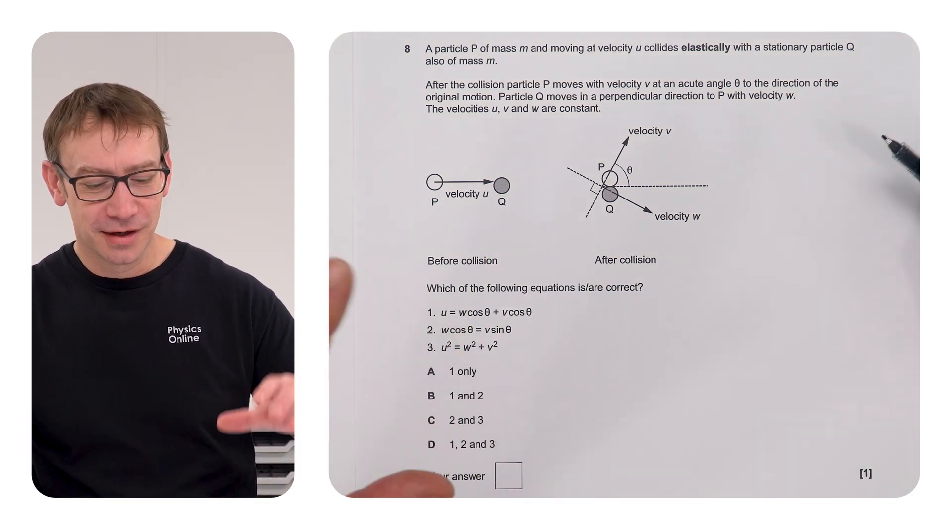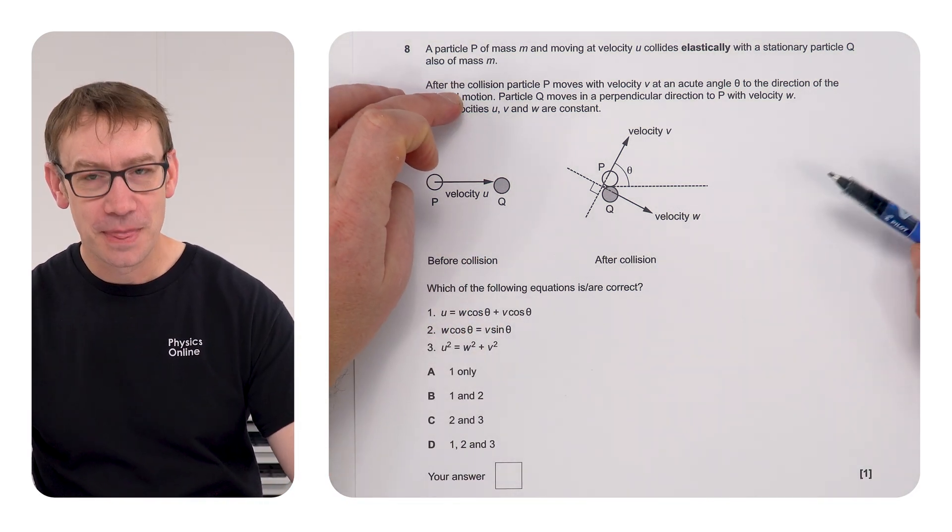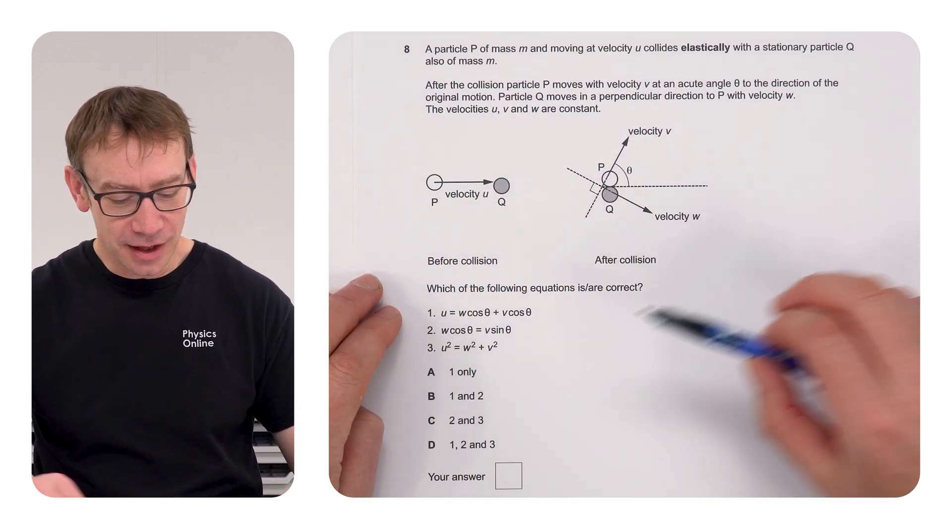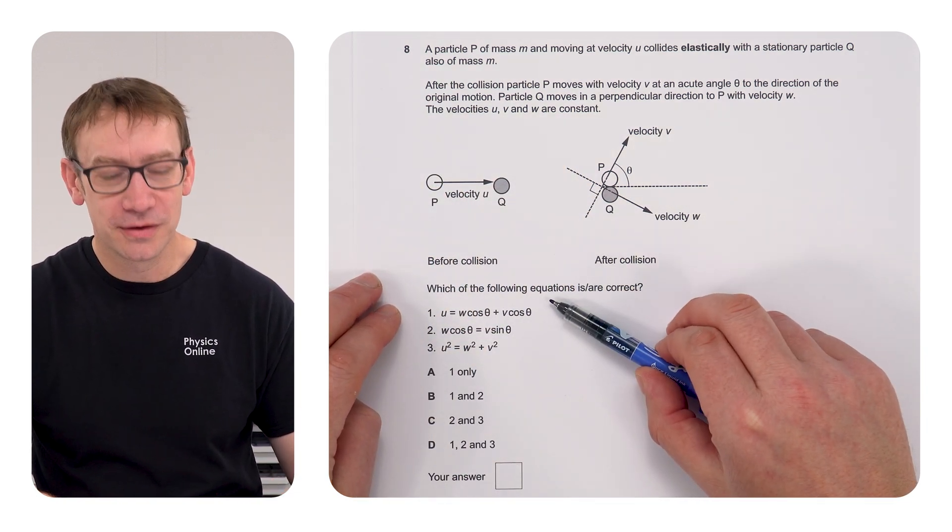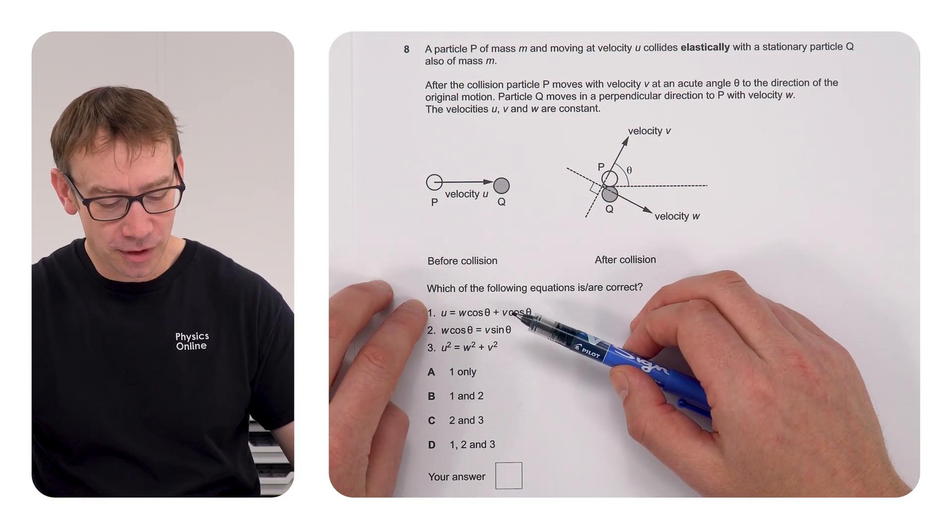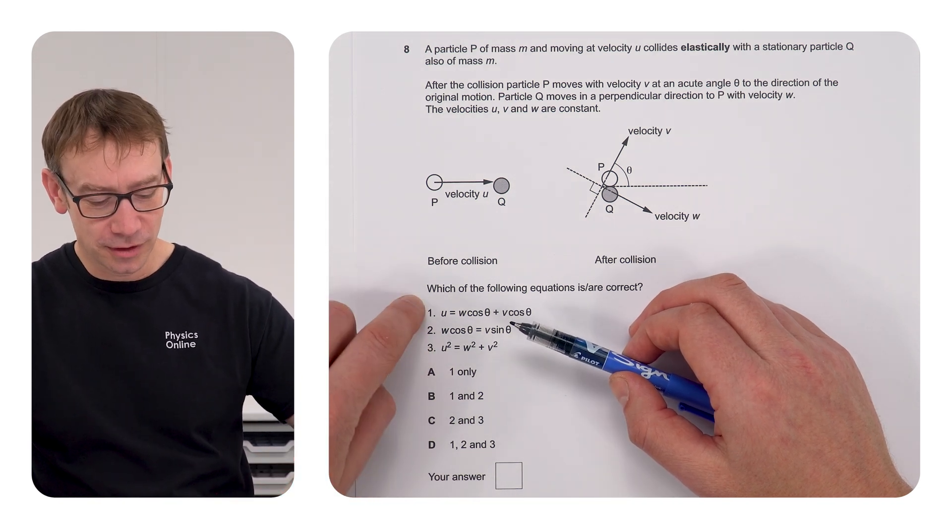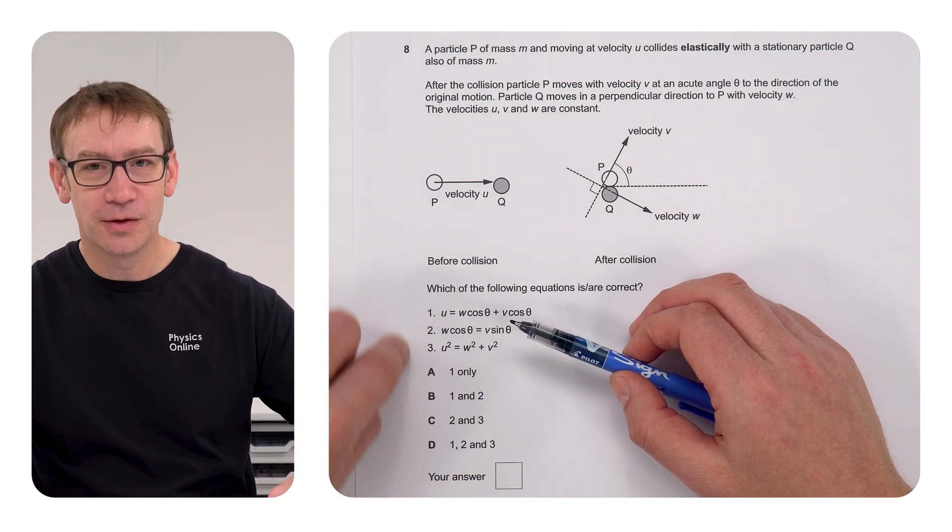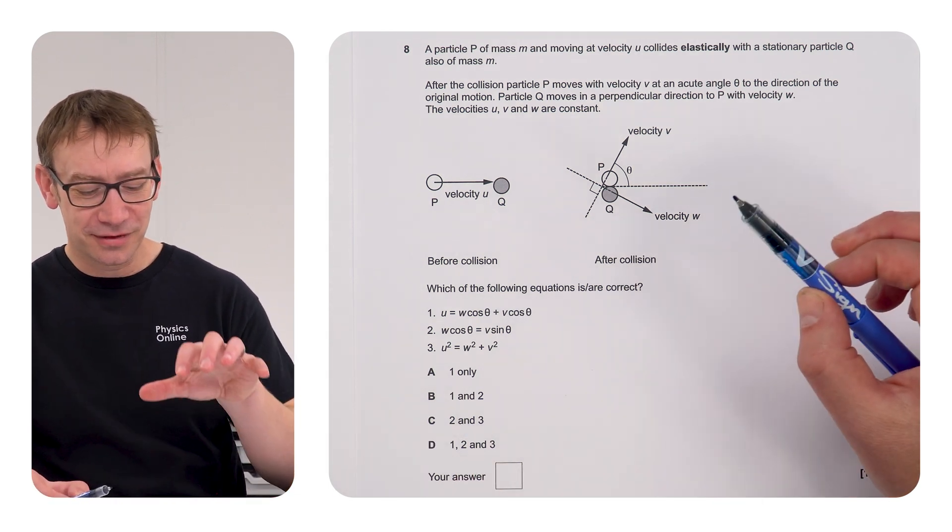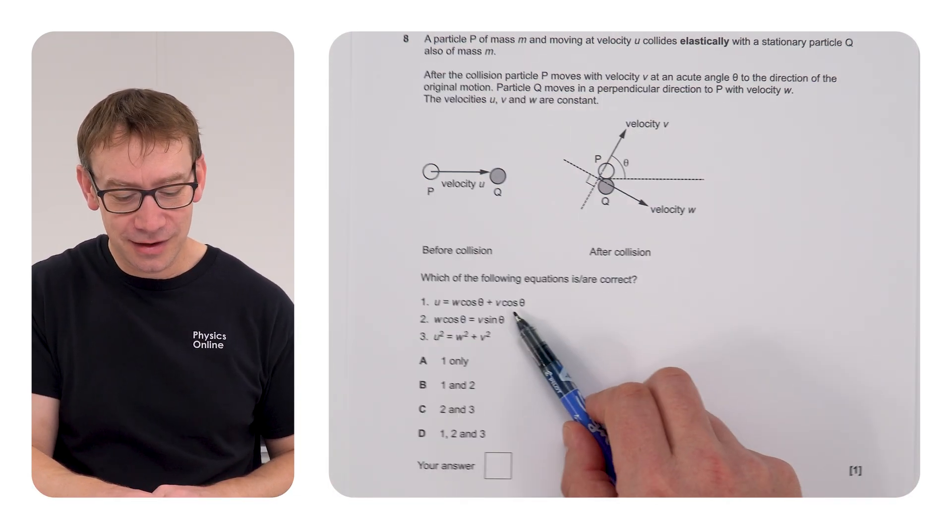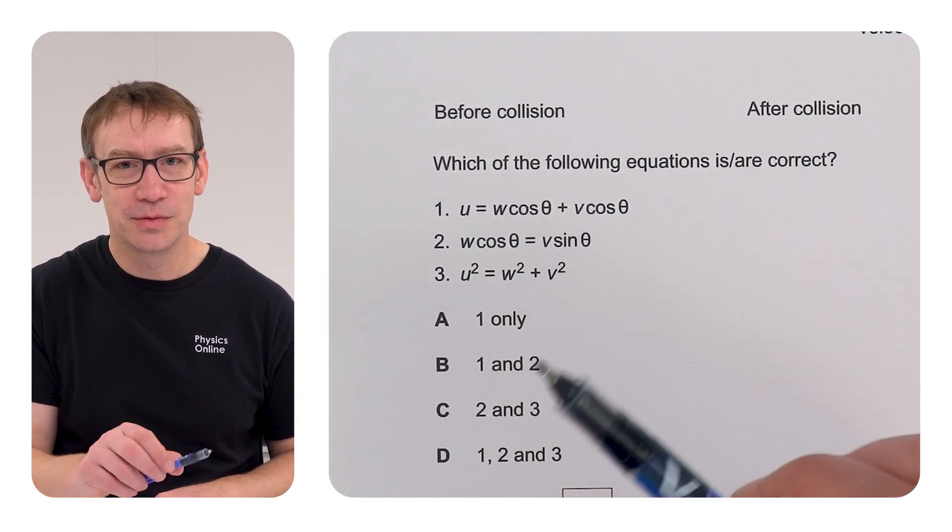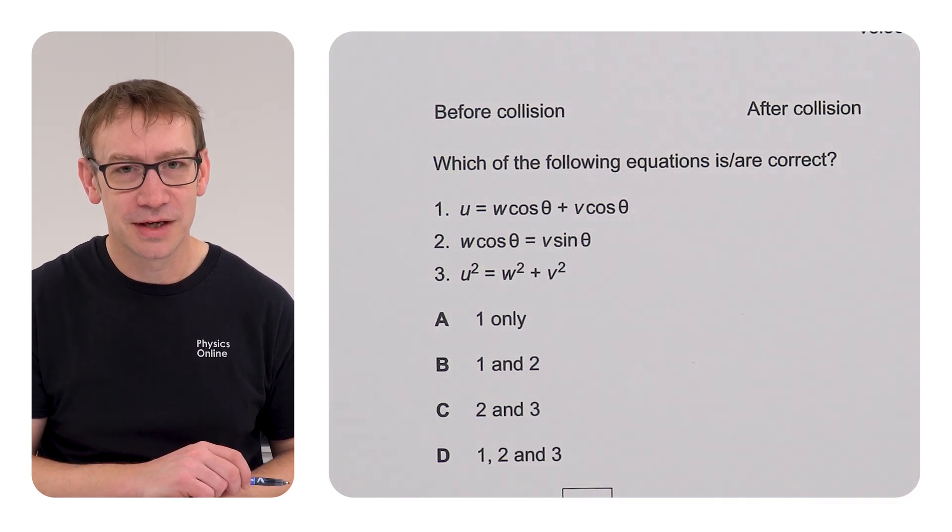There's one key thing to look at. So, after you've read the question, you've had a look at the diagram, it says which of the following equations is correct. So, you've got 1, 2, and 3, and then you've got your choices A, B, C, and D. Is it 1, 1 and 2, 2 and 3, or 1, 2 and 3? Now, there's something here that I think is a massive clue to which is the correct answer, A, B, C, or D.